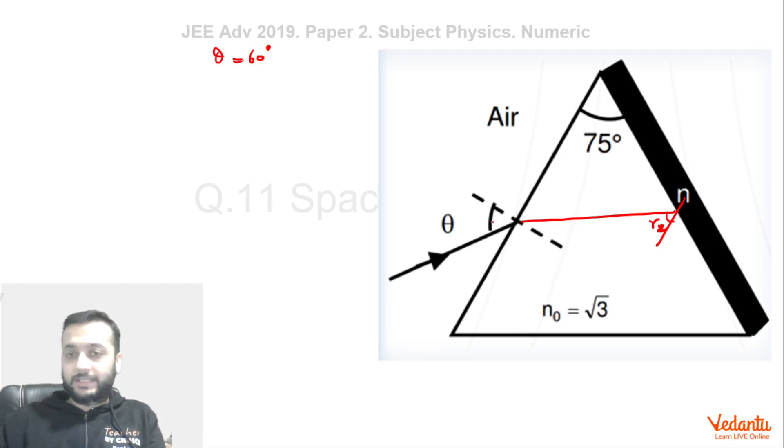So we can say that if you decrease theta this angle will decrease. So if this decreases then this R2 will increase because sum of these two will be 75. So if R2 increases then we can say that it must become greater than critical angle. Because if for theta equals to 60 it is critical, then if we decrease theta then R2 will become more than critical angle. So we can say that at the value of theta equals to 60 this R2 will become exactly equal to critical angle.